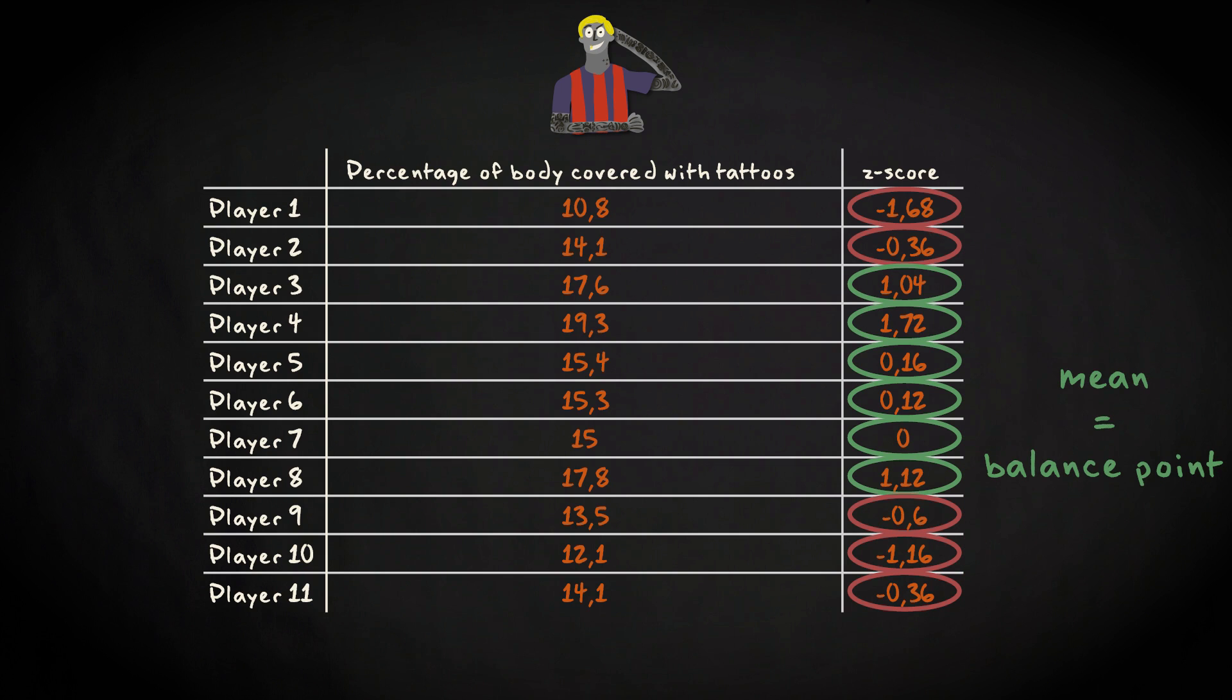Because the mean is the balance point of your distribution, the negative and positive z-scores cancel each other out. In other words, if you add up all z-scores, you will get a value of 0.